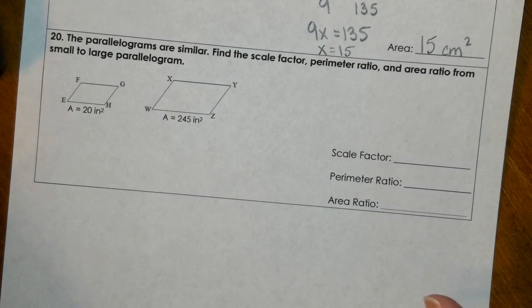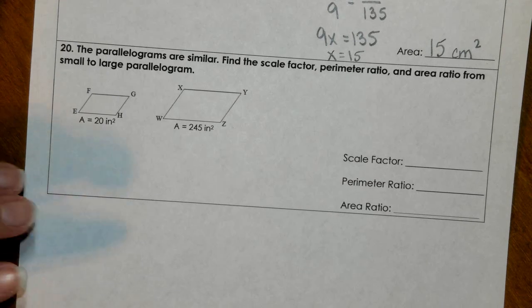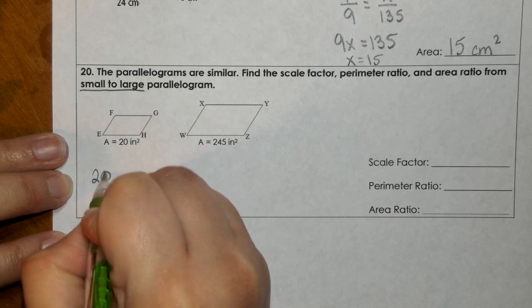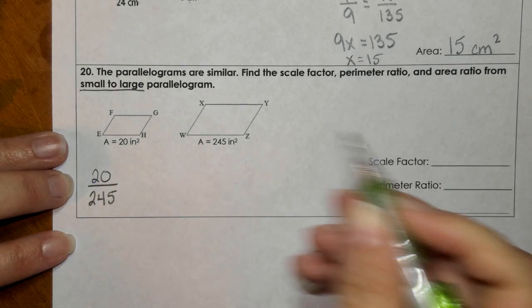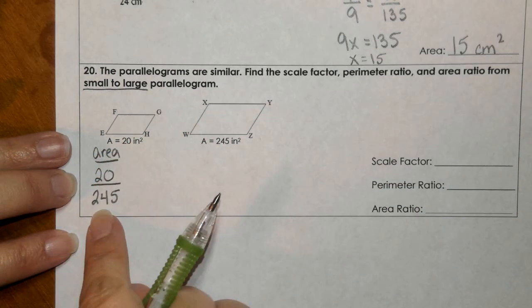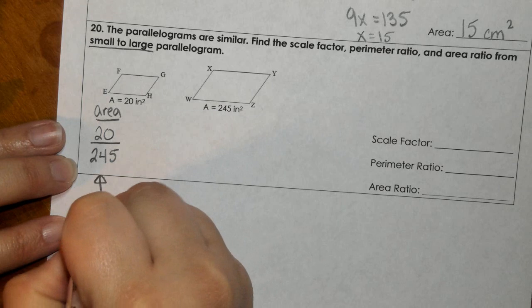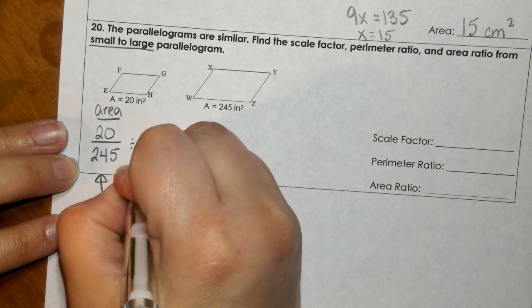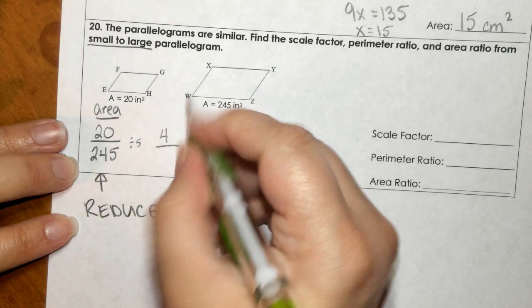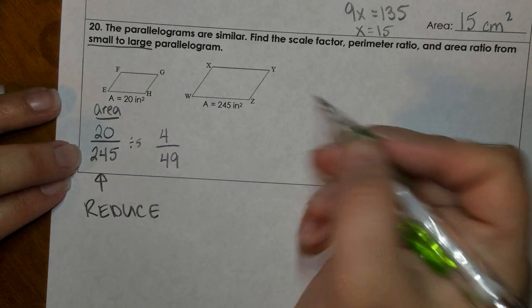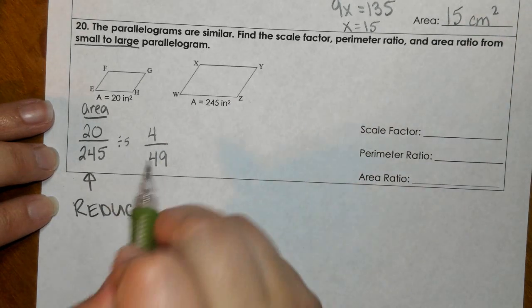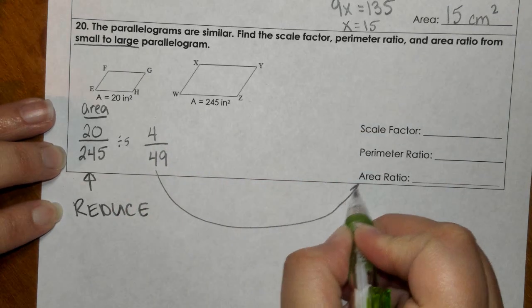For number 20, last one. The parallelograms are similar. Find the scale factor, perimeter ratio, and area ratio from the small to large parallelogram. This right here is important. Small to large. So I'm looking at 20 over 245, this is area. But I know that these are not perfect squares. So you must reduce. So let's see, 5 can go into both of these. I divided both by 5. I get 4/49ths, and I know that that is a perfect square.